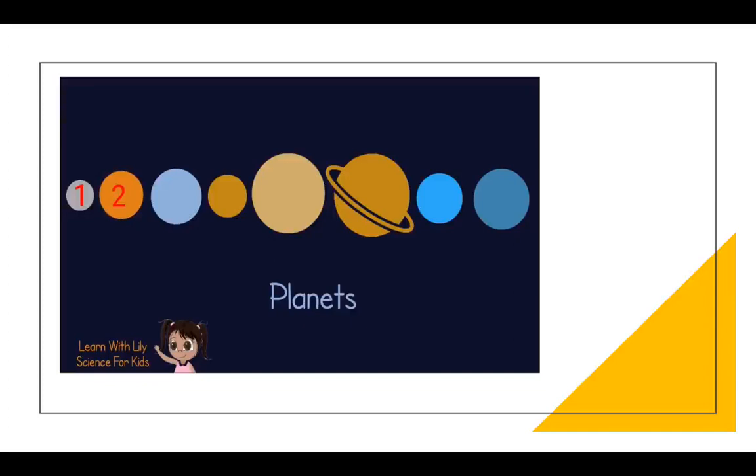1, 2, 3, 4, 5, 6, 7, 8. Yay! And the third one is Earth. It's where we live. There are many other planets that surround us. And their names are...